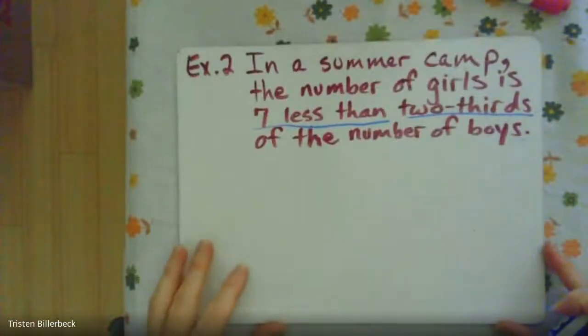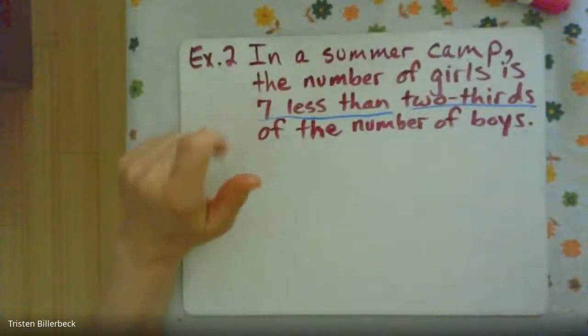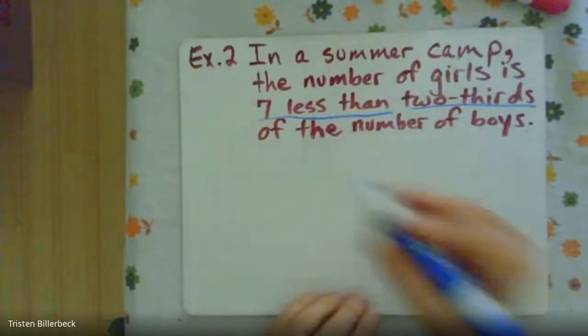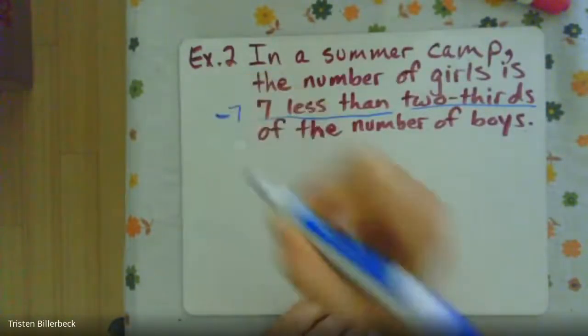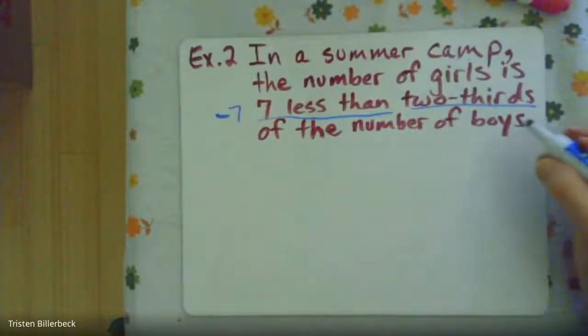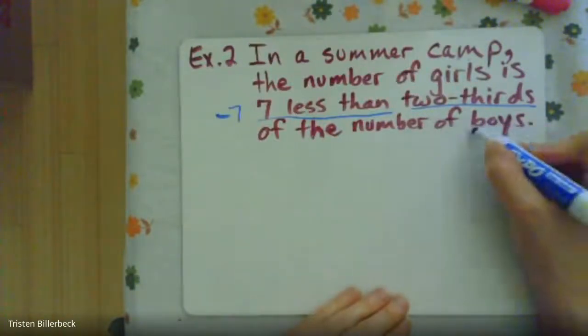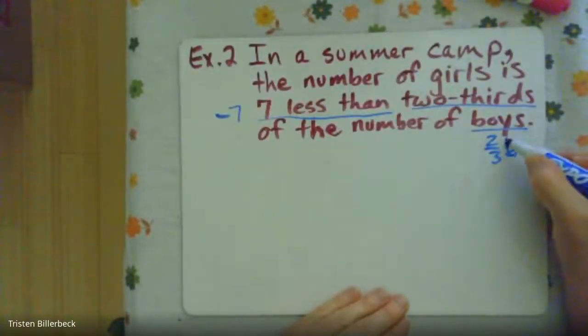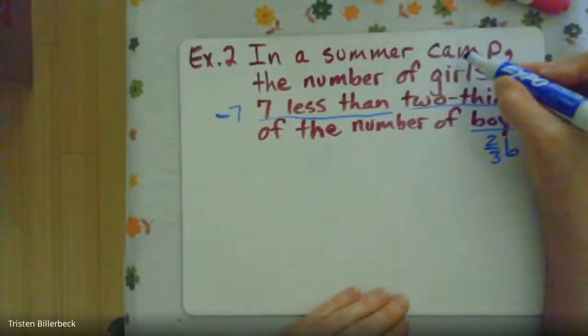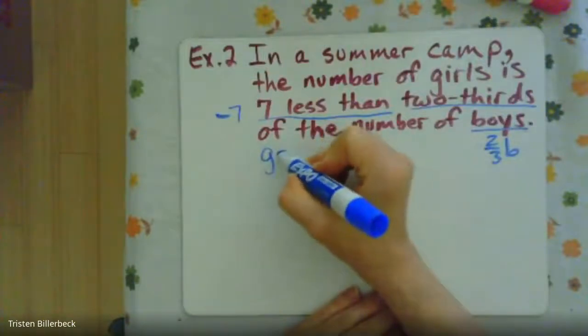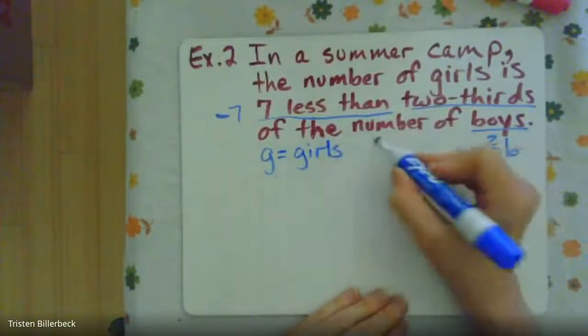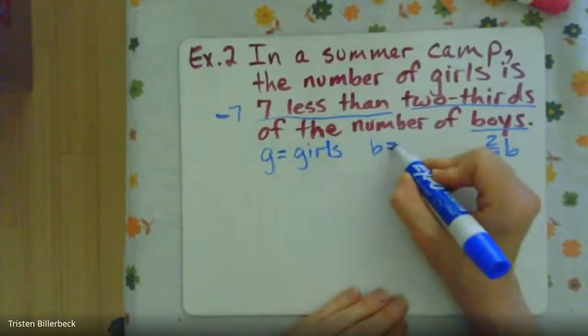So let's look at the summer camp. So in a summer camp, the number of girls is seven less than, so that's minus seven, two-thirds of the boys. So that would be two-thirds the boys, if we use B for boys and G for girls. So G equals girls, and B equals boys.